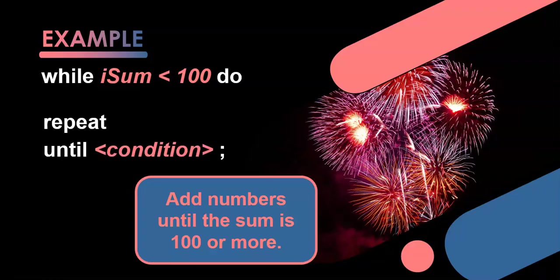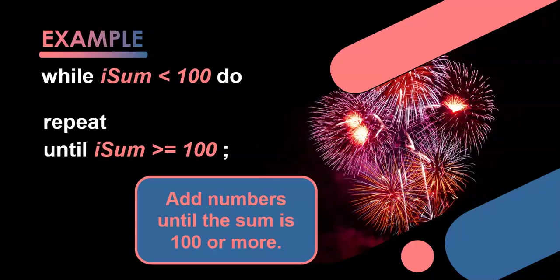In a repeat loop, the condition is the exact opposite. The opposite of less than is greater than or equal to. So: repeat until iSum is greater than or equal to 100. We repeat adding numbers until our sum is 100 or more — that's when we stop. The while and the repeat loop, for the exact same scenario, will have the exact opposite condition.